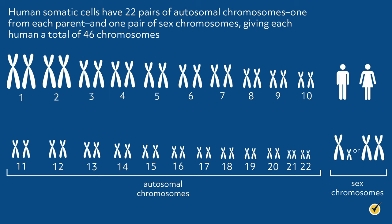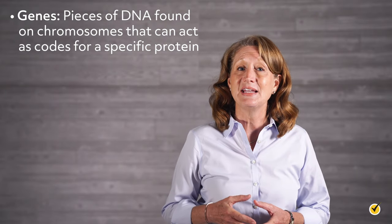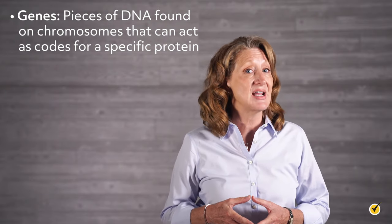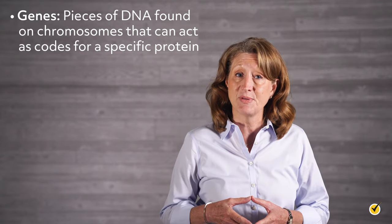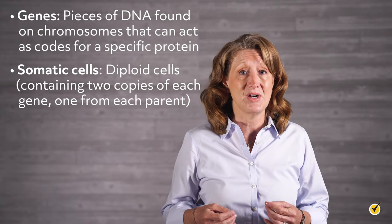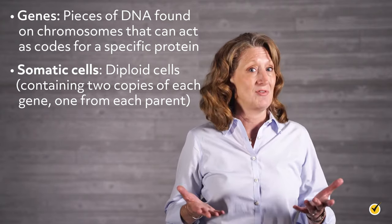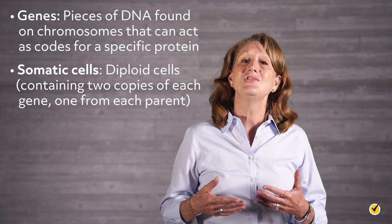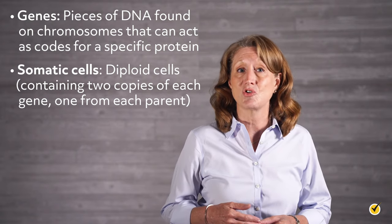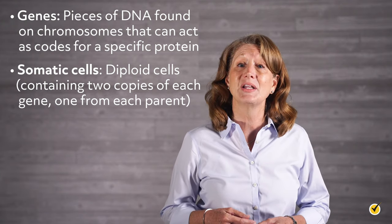Chromosomes are made up of DNA that is tightly coiled around proteins called histones. Genes are pieces of DNA found on chromosomes that can act as codes for a specific protein. Our somatic cells are diploid, meaning we have two copies of each gene — one from each parent. These genes influence all kinds of traits, but how do we know which traits offspring will inherit?